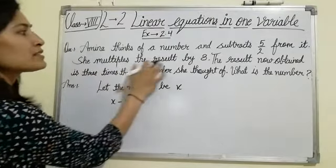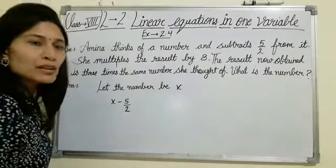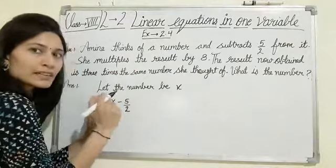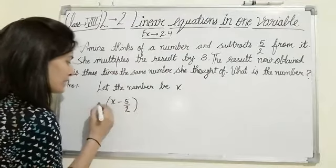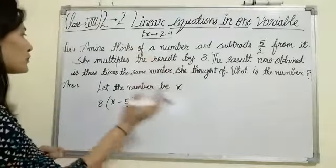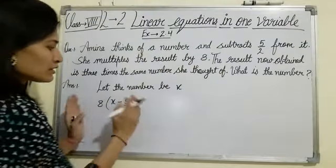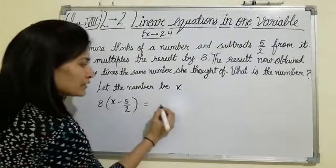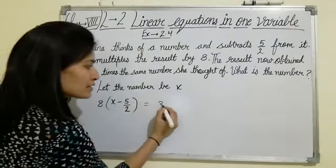She multiplies the result by 8, so now multiply by 8. The result now obtained is 3 times the number she thought of. She thought of x, let the number be x, so 3x. What is the number?